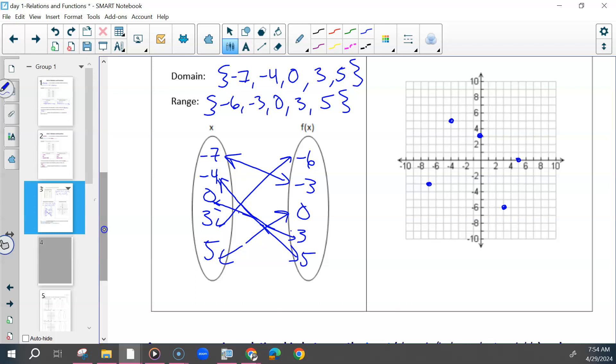And that's how we would do the mapping. Using either the table or the graph or the ordered pairs, writing your domain and range, least to greatest, and then putting them also least to greatest in your ovals and literally mapping them together, which ones go together.